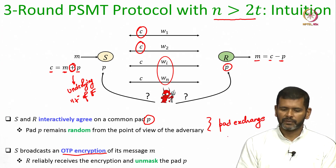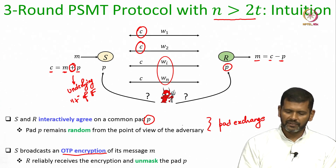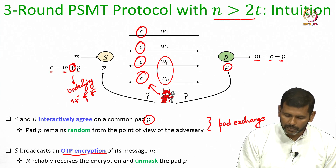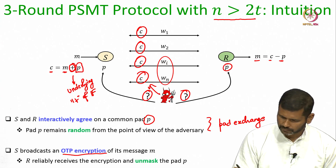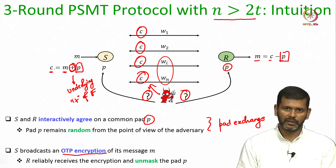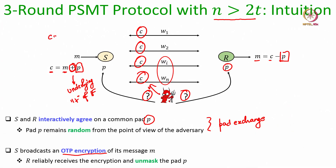The receiver can then recover back the message. Privacy is achieved because even though the adversary sees the ciphertext C (since it is broadcasted), it does not know the exact pad P. Since the pad P is random from the adversary's viewpoint, the value C is also random for the adversary — C could equal m plus P, or m' plus P', or m'' plus P'', and so on. Every candidate message from the message space could have been encrypted in this ciphertext C, so the underlying message is completely random from the viewpoint of the adversary.